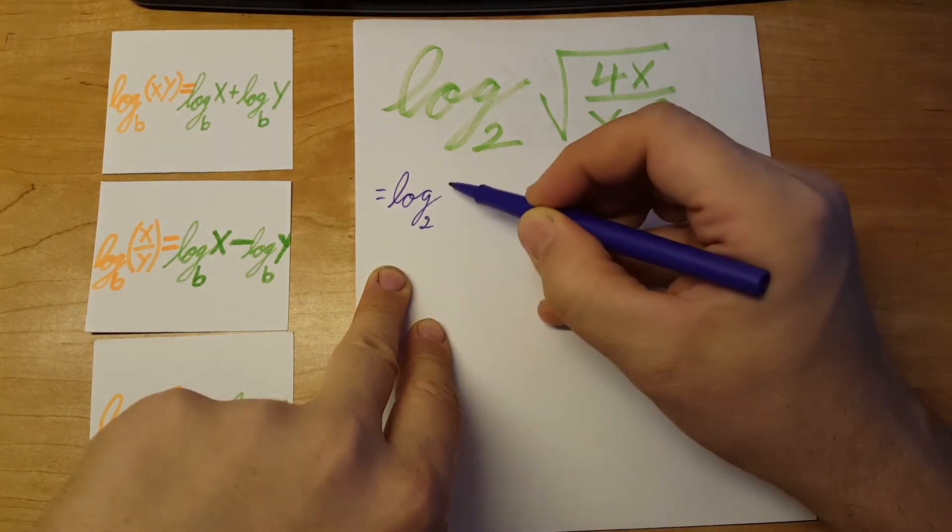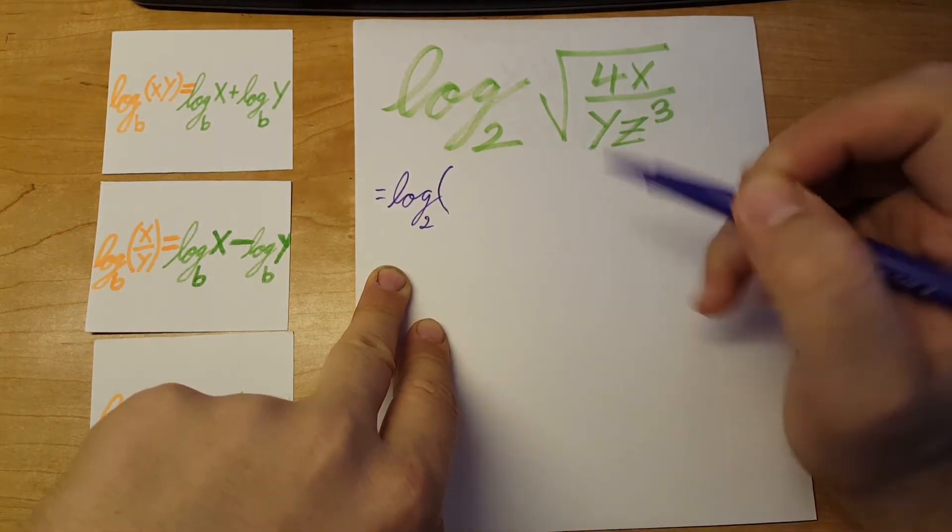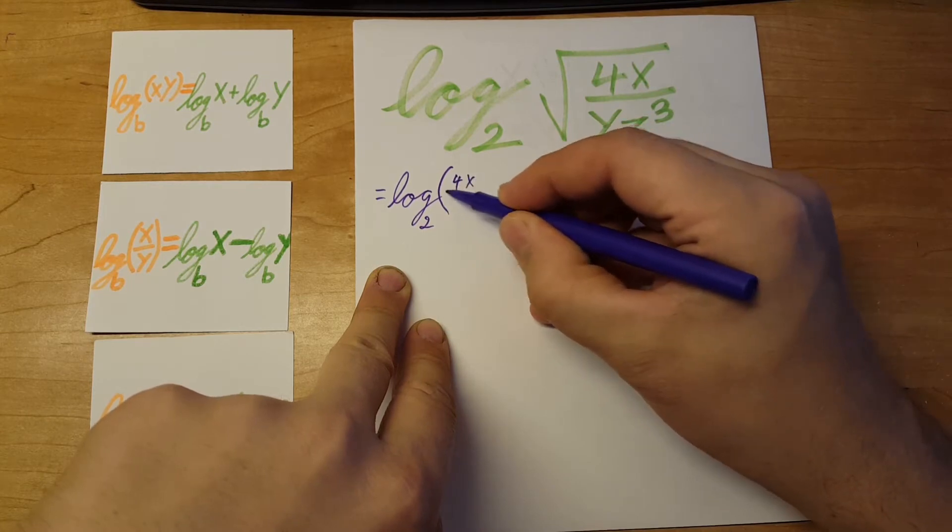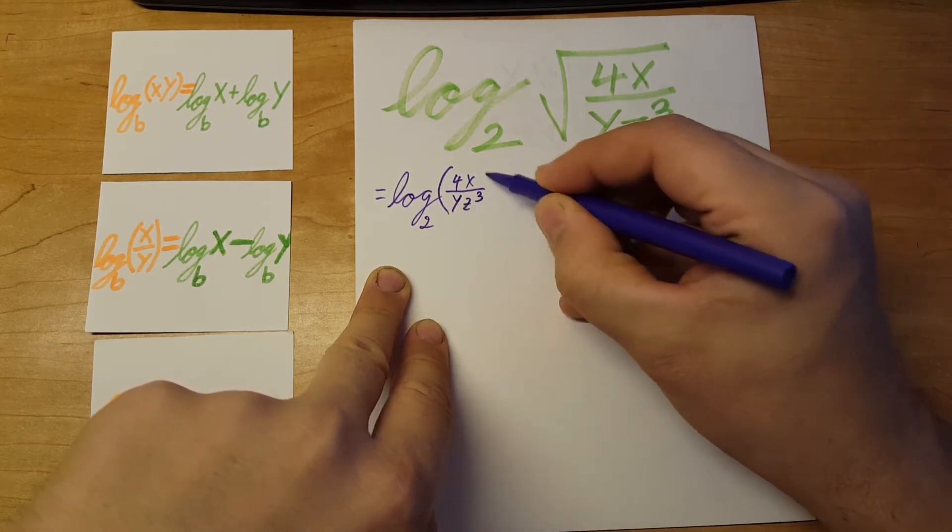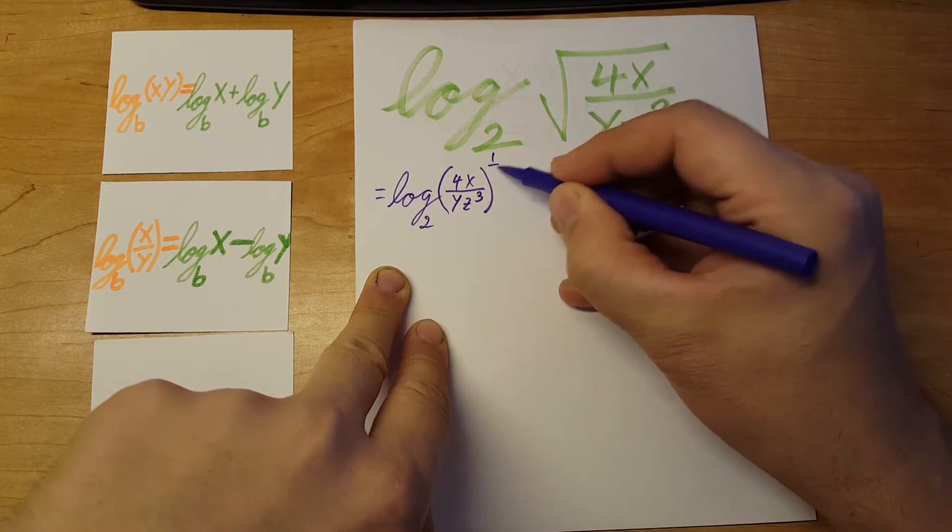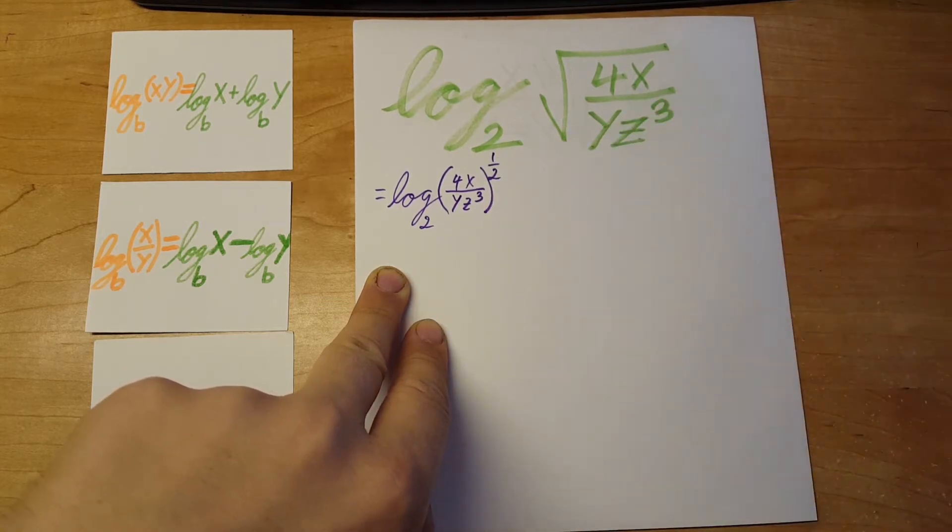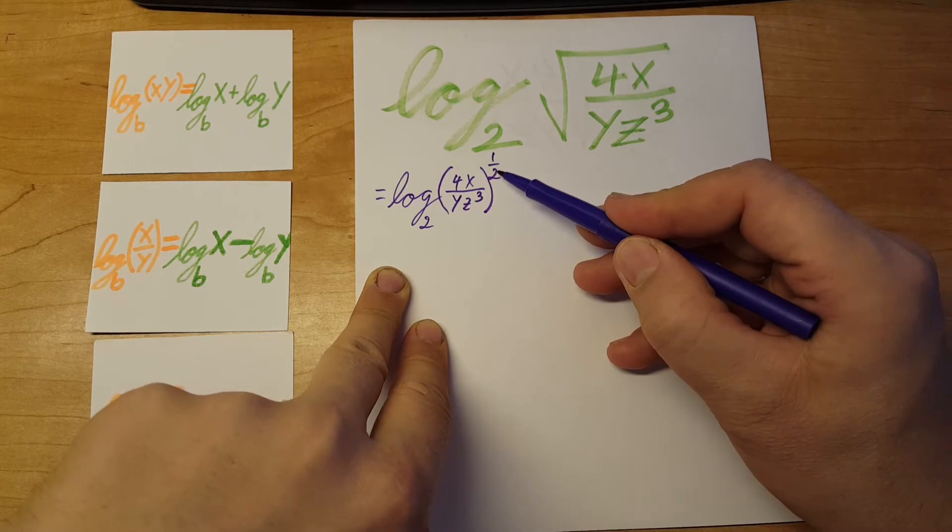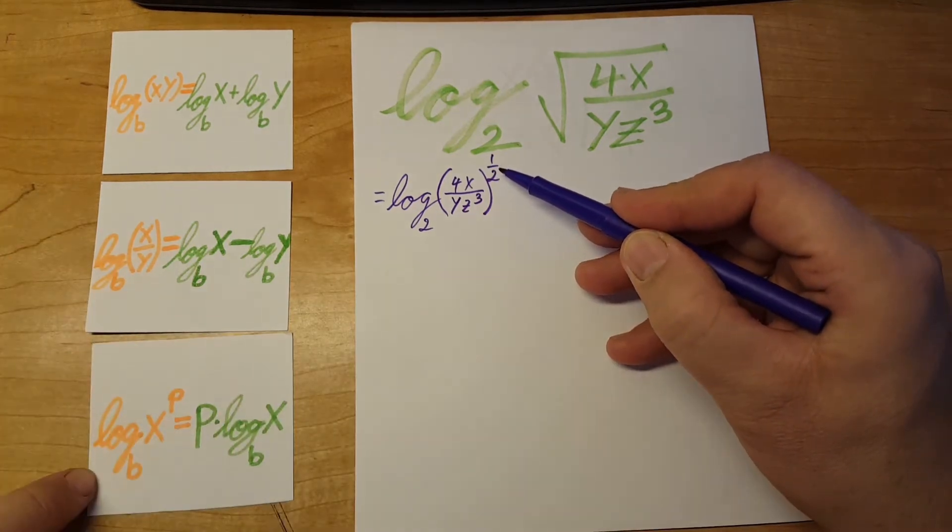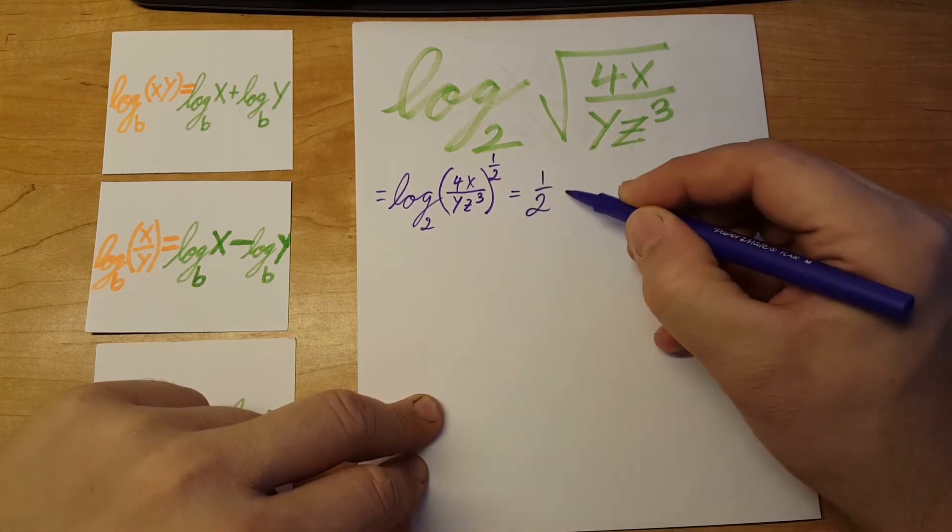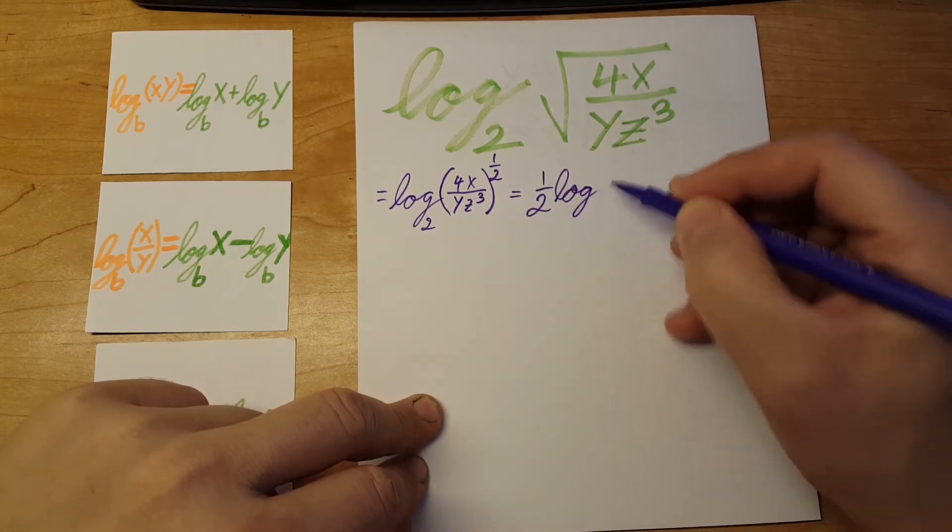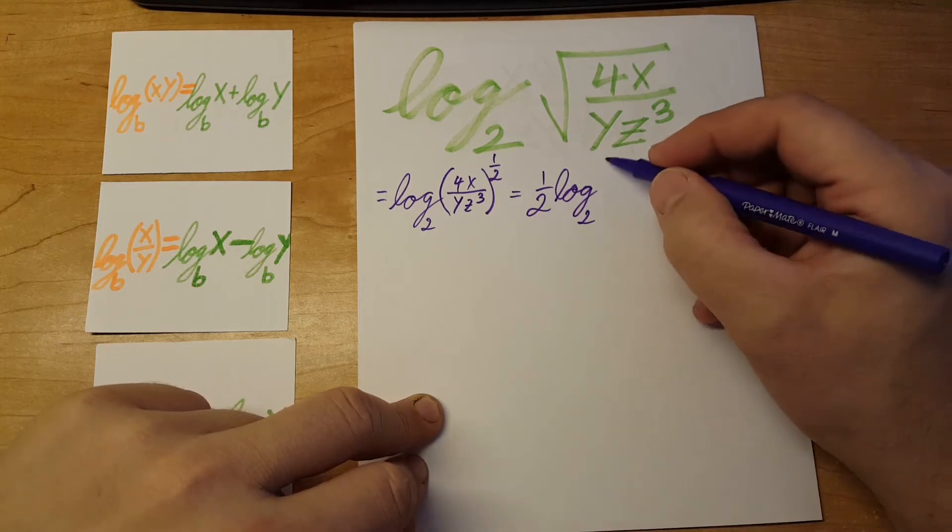Log base 2 of 4x over yz cubed. We're going to put the exponent up there. Now we're going to use the power property and drop it down in the front: one-half log base 2 of 4x over yz cubed.